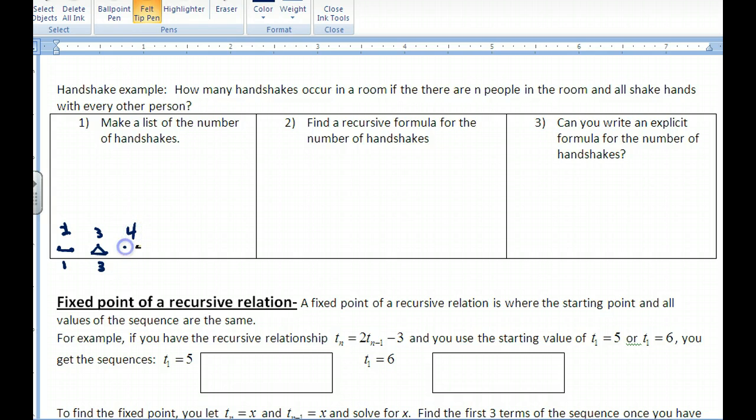Four people in the room, 1, 2, 3, 4. Oh, it's going to be four. Oh, wait a second. These two have to go, too. So actually, I have six segments there. So I went from 1, 3, 6.